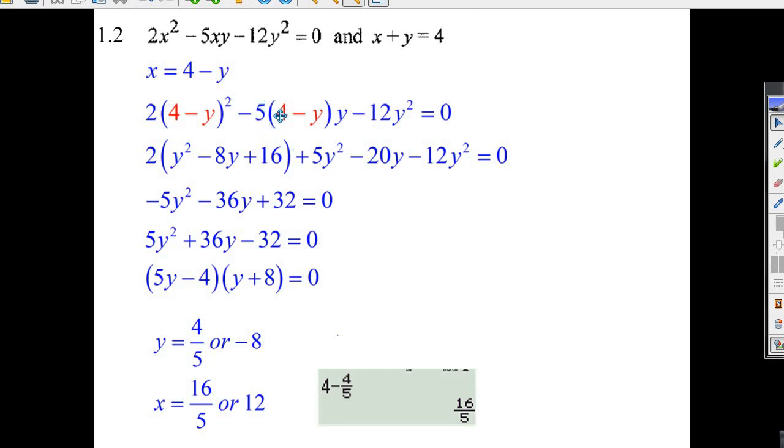Minus 5 times 4 is minus 20, times y is minus 20y. So, there, we got that right.